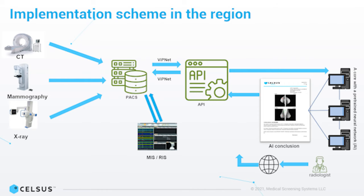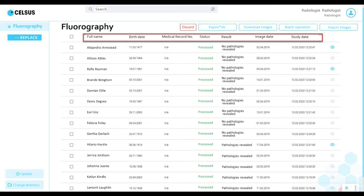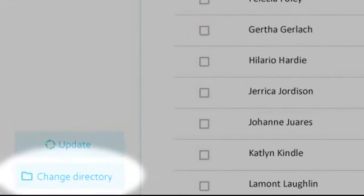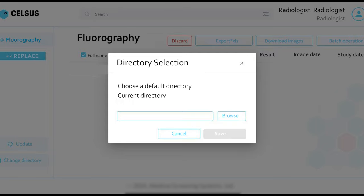The system is designed not to increase the load on the doctor, but to help him. As soon as the study enters the PACS system, Celsus performs a processing procedure. The doctor sees the result of the analysis in the familiar interface. To get started, let's go to the profile section of the system and select the study location directory.